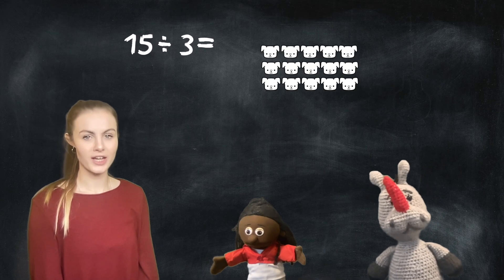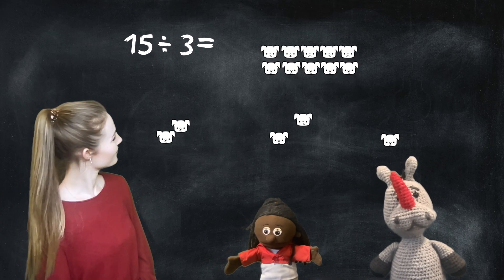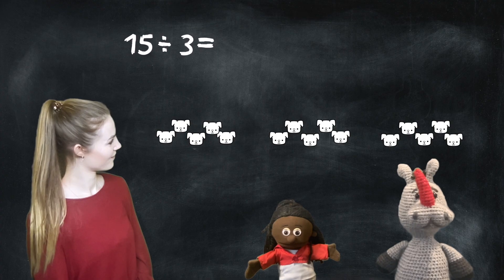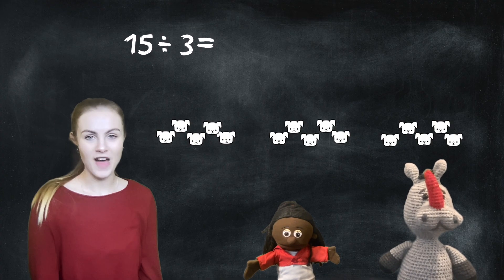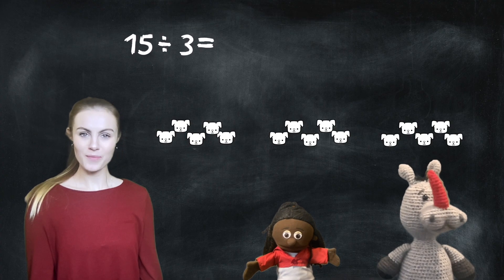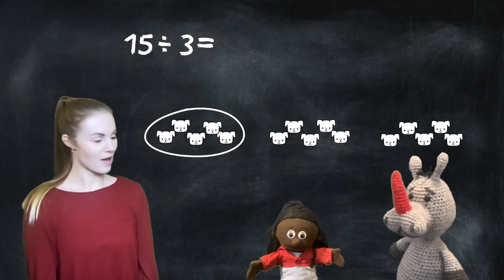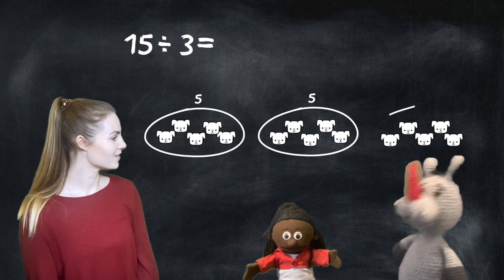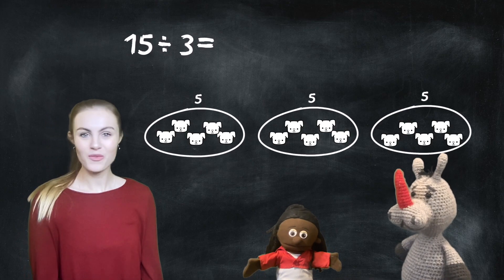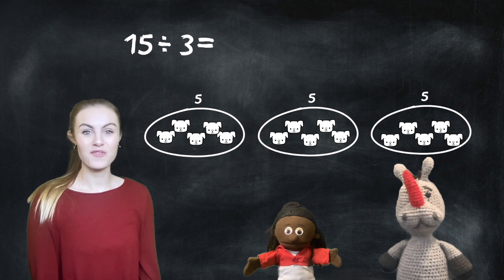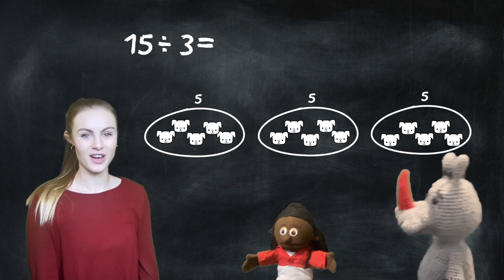Fab! Shall we see how many we've got? Well, I've got 5. How many do you have Roo? You've got 5. Pig? 5? Fabulous. We've all got 5. So that means that 15 divided by 3 equals 5.